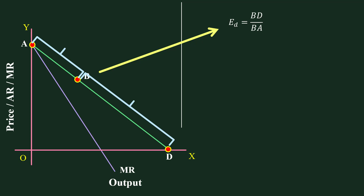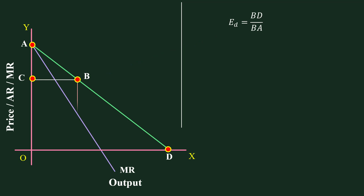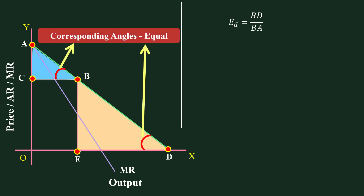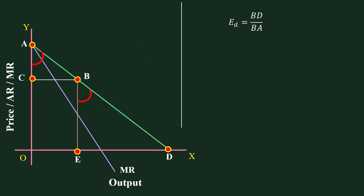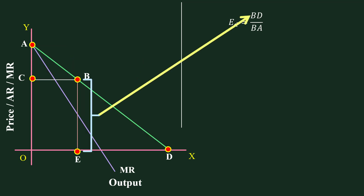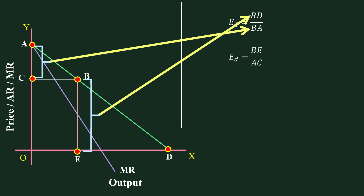Let me try to make it as simple as possible. Take Triangles ACB and BED. Angle ACB equals Angle BED — right angles. Angle ACB equals Angle EDB — corresponding angles. So Triangles ACB and BED are equiangular. Therefore, BD can be replaced with BE and BA with AC, so the formula BD/BA can be written as BE/AC.